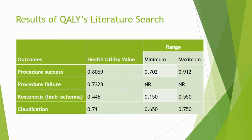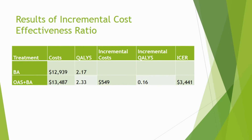The literature search resulted in health utility values as follows. Procedure success was assigned the highest health utility value, followed by procedure failure, with restenosis resulting in the lowest health utility value. All of these inputs were constructed into an incremental cost-effectiveness ratio analysis.